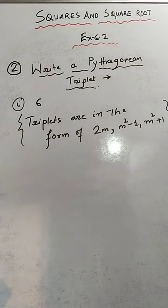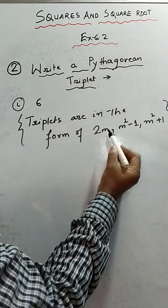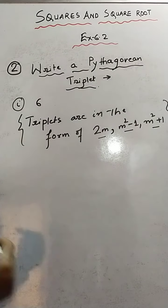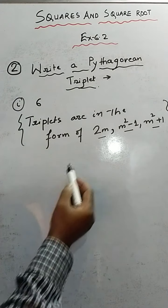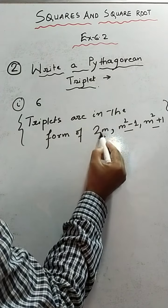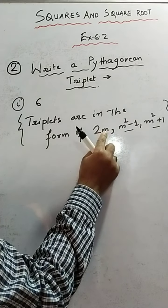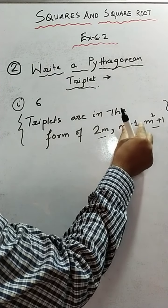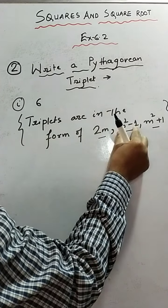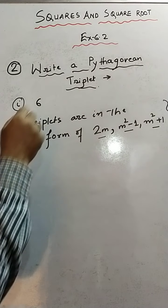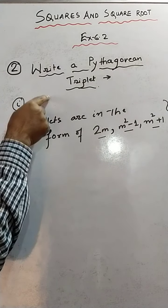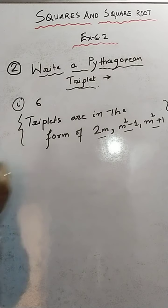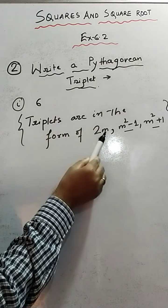So triplets are in the form of 2m (first number), m²-1 (second number), and m²+1 (third number). The important thing is that we need to know the value of m. Until we know the value of m, we won't be able to find the other numbers. When any number is given, you need to compare it with 2m.